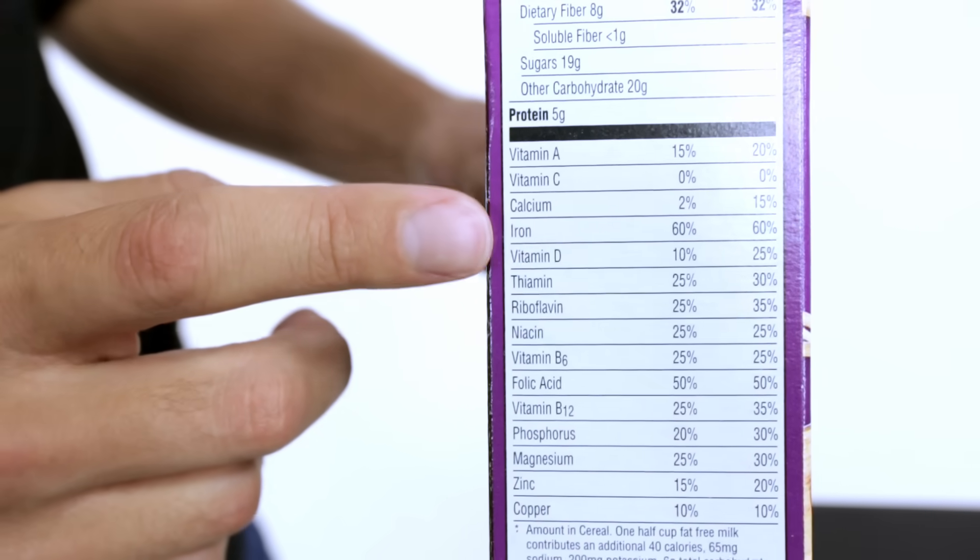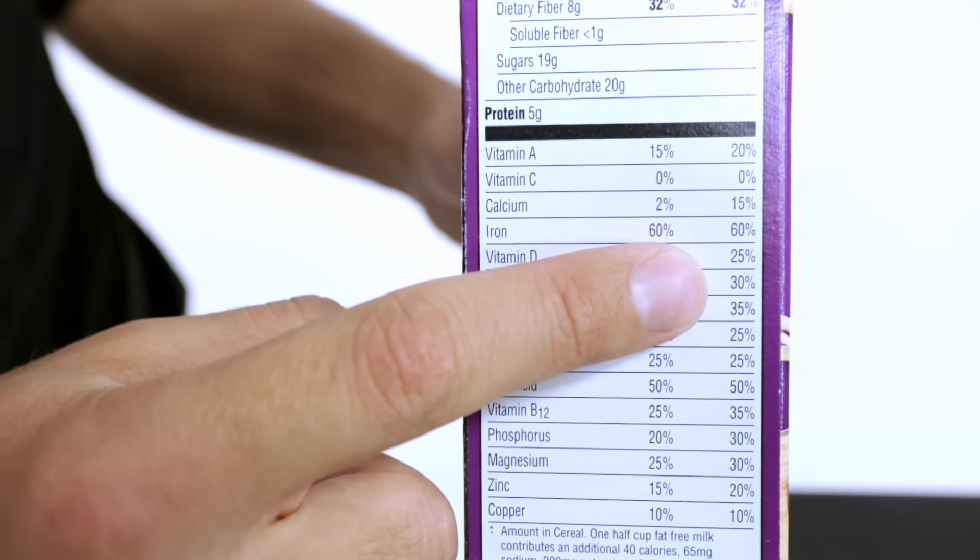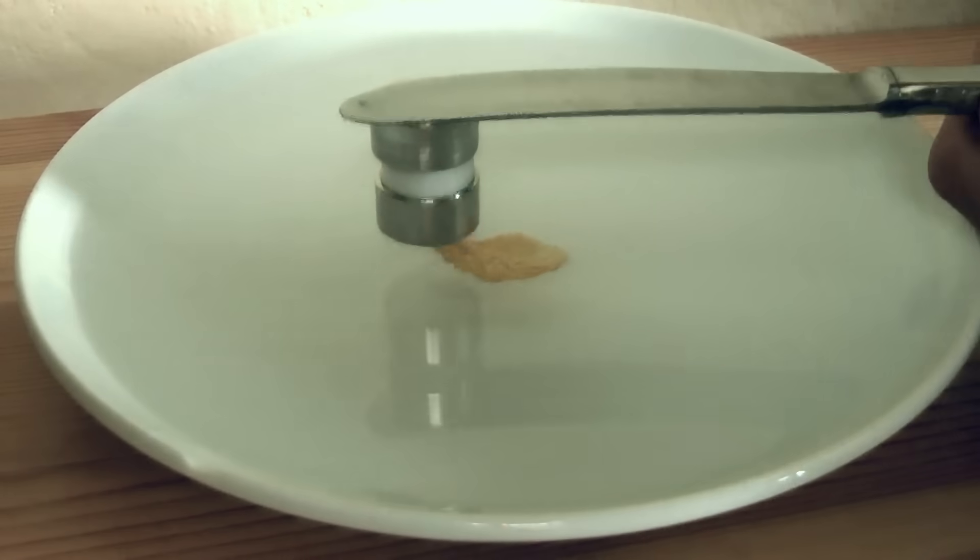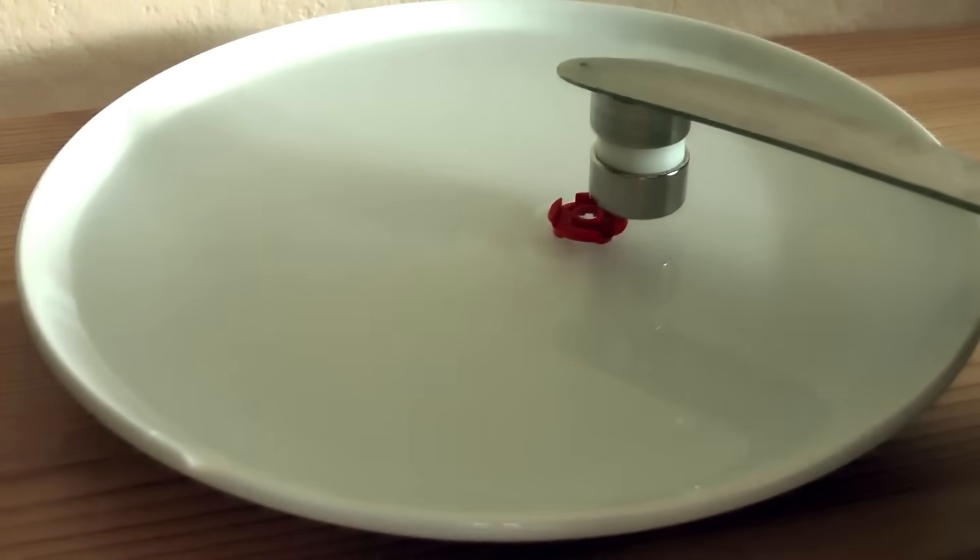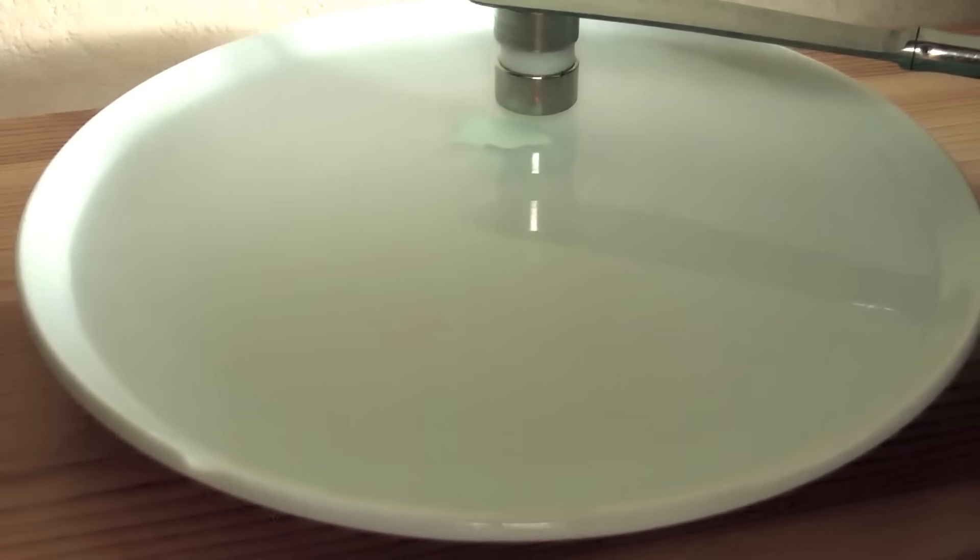In fact, this cereal has 60% of your recommended daily intake of iron. But there's more to it. I received a video response from Martin Baer showing non-magnetic objects like plastic and paper also apparently being attracted to a magnet. So how does this work?